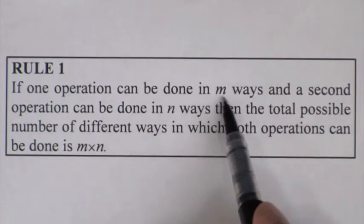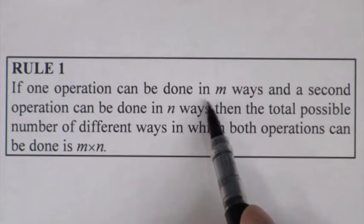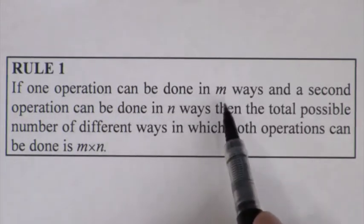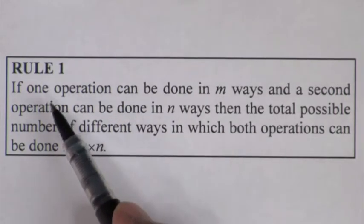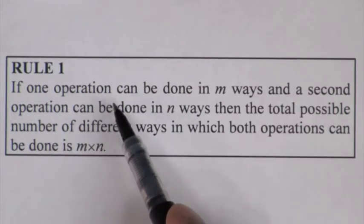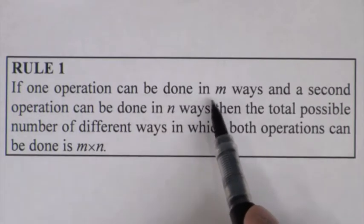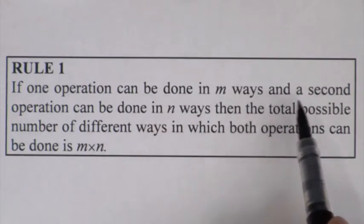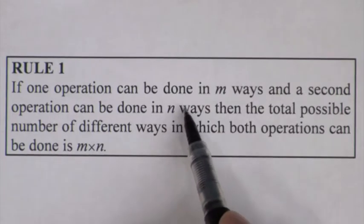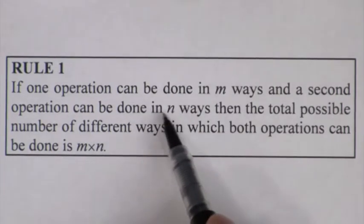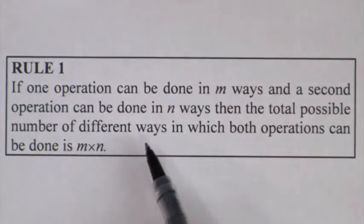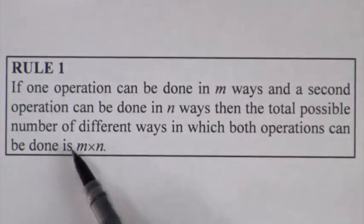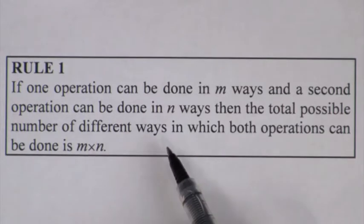This is in general where we use symbols M and N. We can also go to numbers, which will maybe explain it a little bit better. So if I've got a certain task to perform and I can do it in three different ways, and I've got a second task that I can do in two different ways, then the total number of different ways that I can perform both tasks will be three times two, which is equal to six.